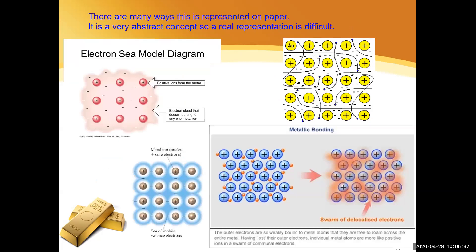There are lots of ways people try to explain this on paper. It's a very abstract concept, very difficult to explain on paper. My particular favorite is the bottom right one where we have a swarm of electrons. But they're all different ways that you might see that being explained.